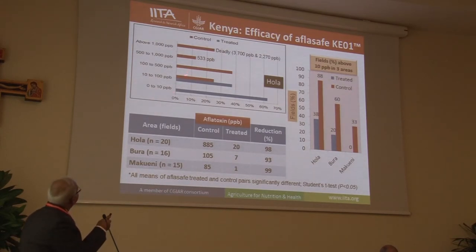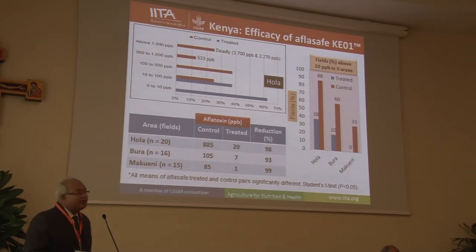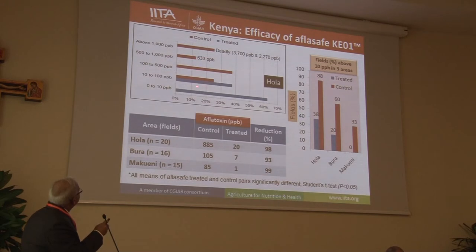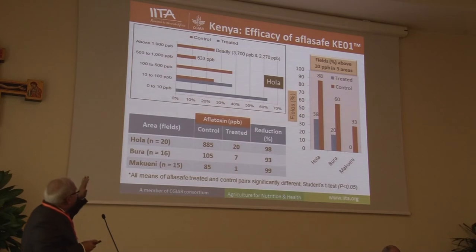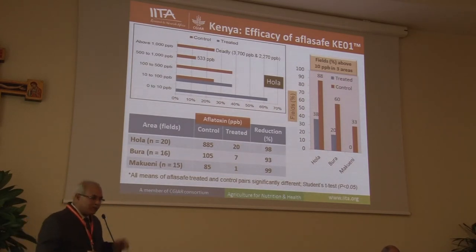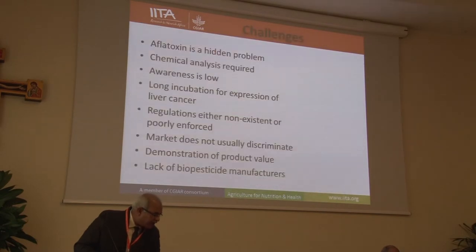For example, there were fields with 3,700 ppb in the untreated ones, but most of the treated ones were comparatively safe. Even where treated fields were above 10 ppb, they were in the range of 20 to 30 ppb. And if you use the product again the next year, it will gradually go down dramatically. So over a period of time, you can get rid of the problem.